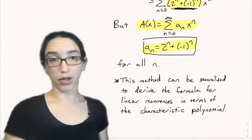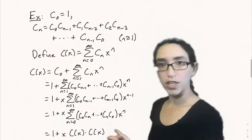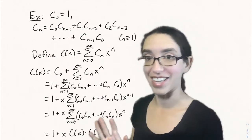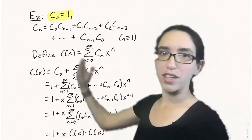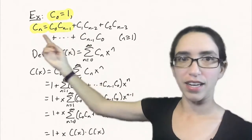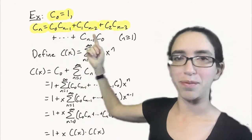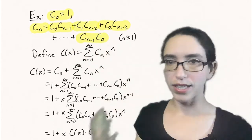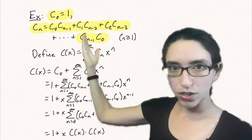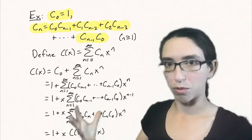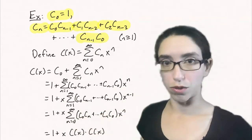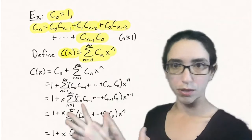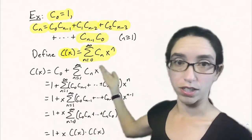Generating functions are a very powerful tool for solving recurrences. Let's look at one more example where we find a closed form for the generating function but don't yet use it to find an explicit formula — that's coming at the end of the course. The example is the Catalan numbers: c0 equals 1 and c_n equals c0·c_{n-1} plus c1·c_{n-2} and so on, down to c_{n-1}·c0, for all n at least 1. This recursion is essentially the convolution of the sequence c with itself, so multiplying generating functions will come in handy.